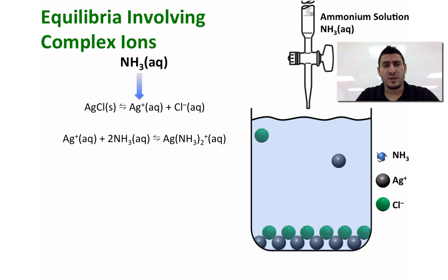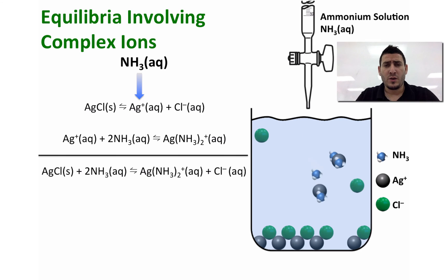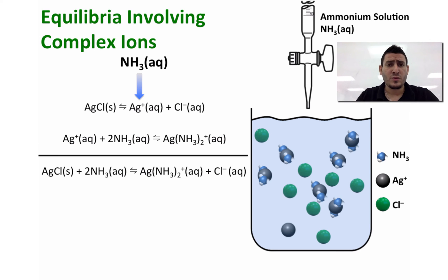Ammonia, which is considered a ligand, will react with the silver ion to form the complex ion Ag(NH3)2 plus. The overall reaction happening is silver chloride plus ammonia will give the complex ion plus chloride. As you can see from this animation, every time the ligand takes the silver ions from the solution, the equilibrium will be shifting to the right to produce more silver ions, and therefore it will end up dissolving the solid.